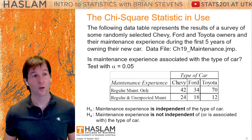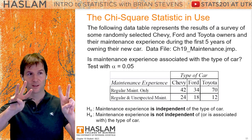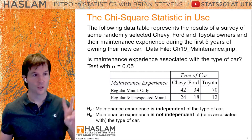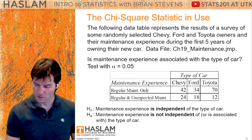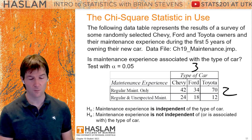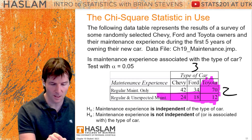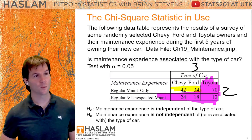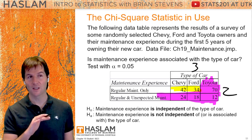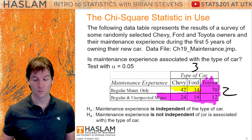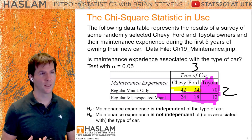Let's look at some examples with cars. Here is a two-by-three, so this chi-squared will have two degrees of freedom: two minus one times three minus one equals two. To write the null and alternative — we have type of car and maintenance — type of car is independent of maintenance, or maintenance is independent of type of car. The alternative: maintenance is not independent of type of car. If you know what type of car someone has, it would influence or give you information about the maintenance they get.